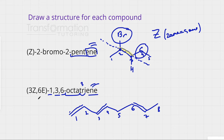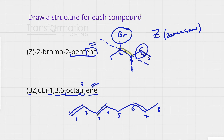The double bond at carbon one is not capable of E/Z isomerism because it's attached to two hydrogens on that side — we wouldn't be able to prioritize one over the other. That's why we only have E/Z configuration for the double bonds on carbon three and carbon six.